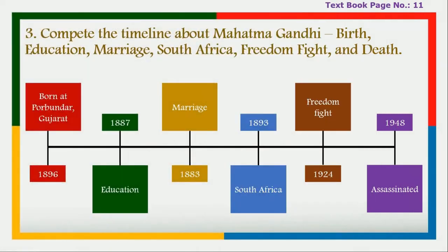Next exercise three: complete the timeline about Mahatma Gandhi, covering education, marriage, South Africa, freedom fight, and death. Born at Porbandar, Gujarat in 1869. Educated in 1887. Married in 1883. Went to South Africa in 1893. Started freedom fight in 1924. Assassinated in 1948.